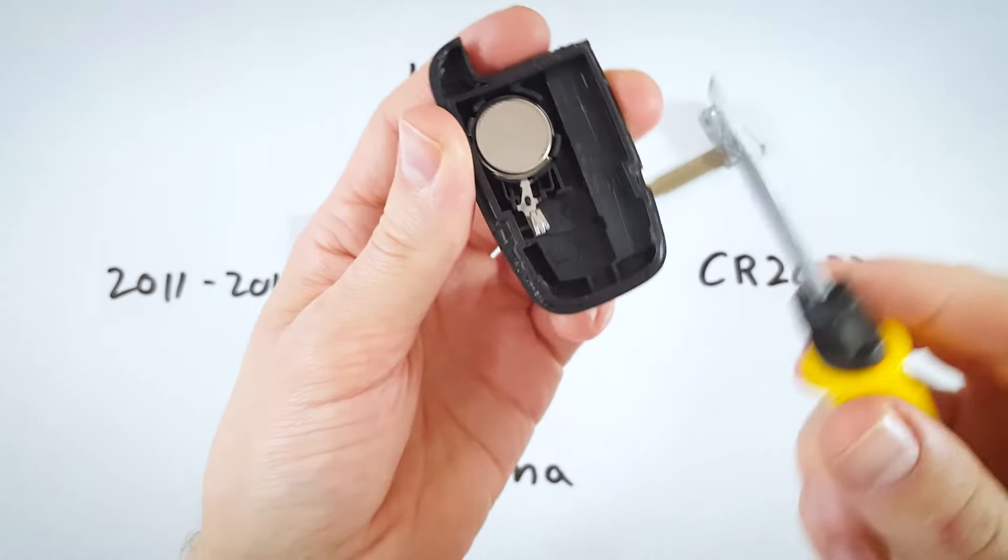Now all we need to do is click the two halves of the key fob back together and return the internal key to its place.